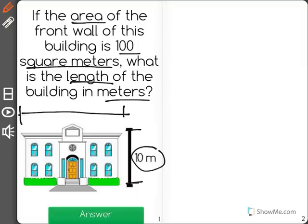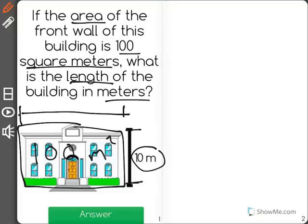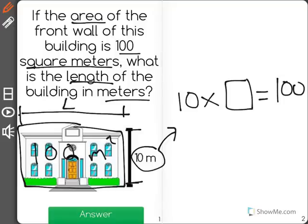I know that the area of the entire front wall is 100 meters squared. So that means that our width of 10 meters times our length, which we're trying to figure out, is equal to 100.